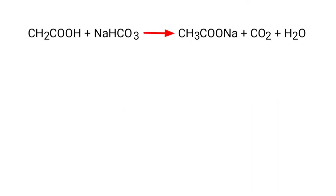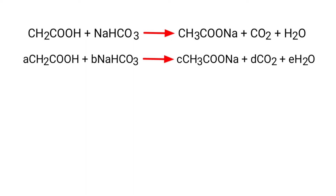The first thing we do is give each compound a letter coefficient: A·CH2COOH plus B·NaHCO3 gives C·CH3COONa plus D·CO2 plus E·H2O.